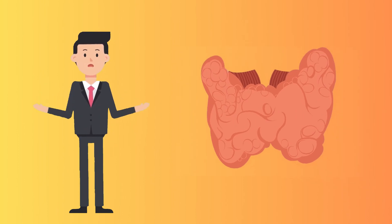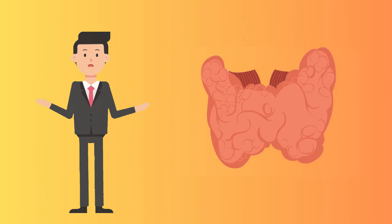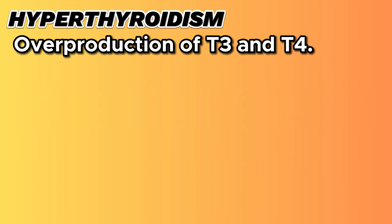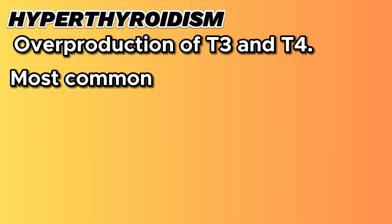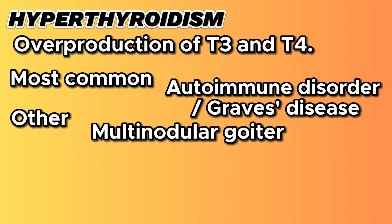So what happens when the thyroid gland produces an excessive amount of thyroid hormones? This leads to hyperthyroidism. Hyperthyroidism occurs when there's an overproduction of T3 and T4. The most common cause is an autoimmune disorder called Graves' disease. Other causes include multinodular goiter, thyroiditis, and excessive iodine intake.